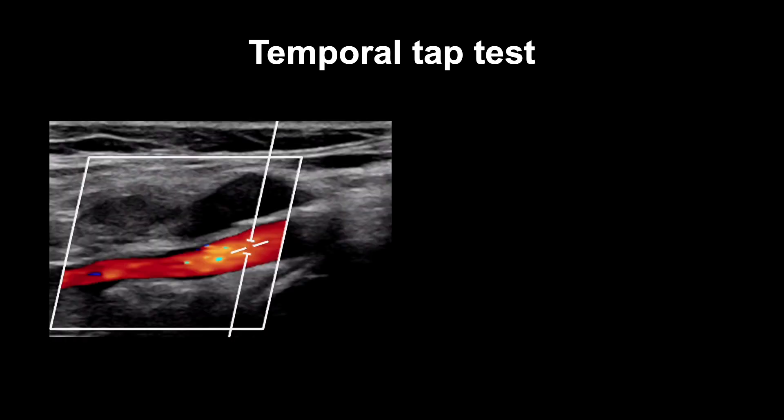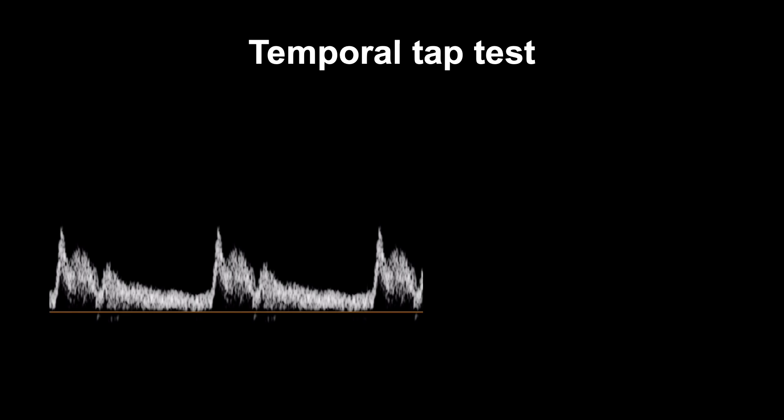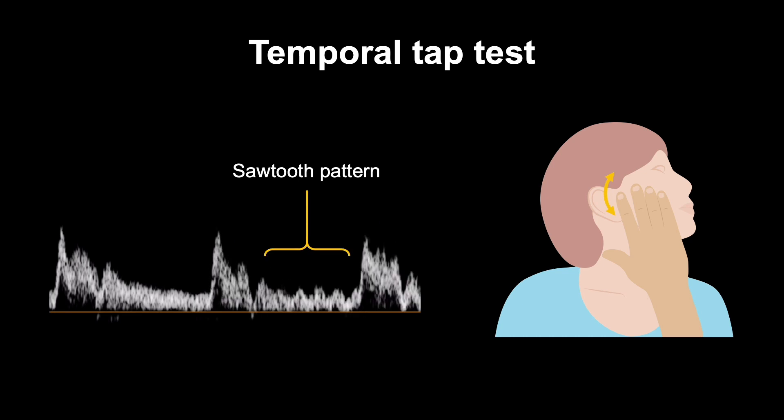In these situations, the temporal tap test can be used to help identify the ICA. To perform this test, position the Doppler sample volume in what you think is the ICA and switch on the Pulse Doppler. Once you have a clear pulsatile waveform, use a finger from your other hand to locate the temporal artery in front of the patient's ear. Lightly tapping here while keeping the probe very still should produce a sawtooth pattern in the ECA waveform, but will have no effect on the ICA waveform.